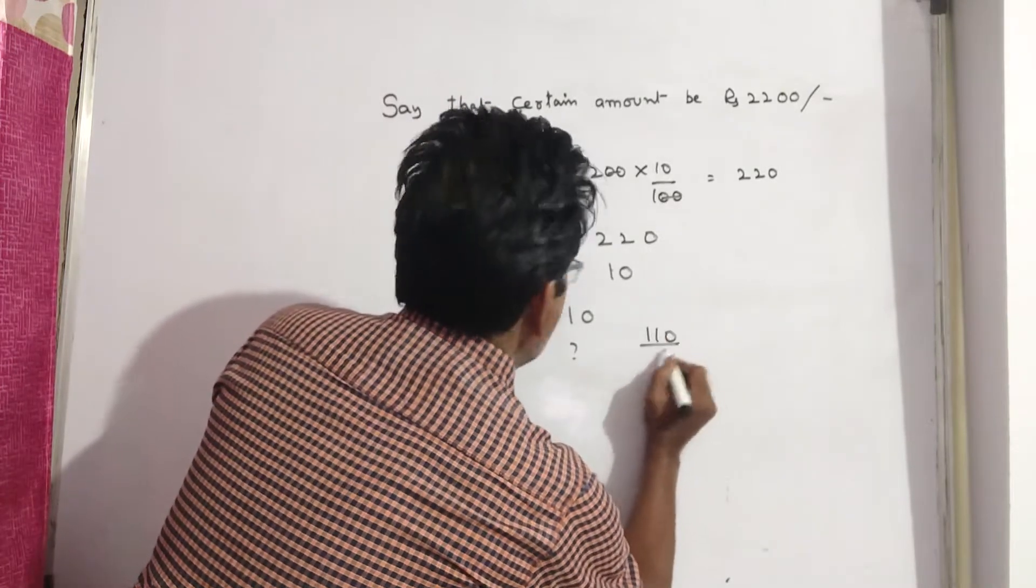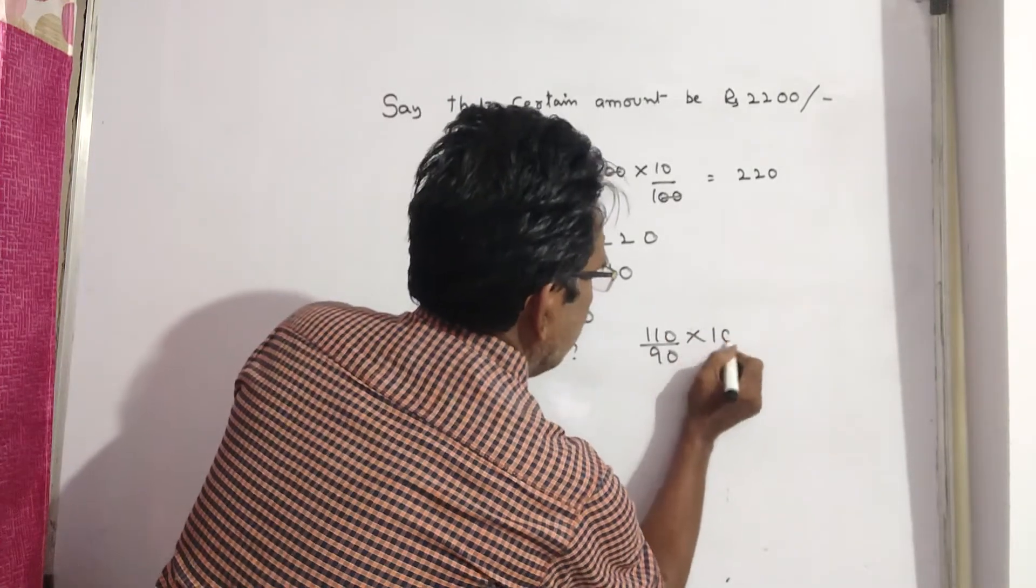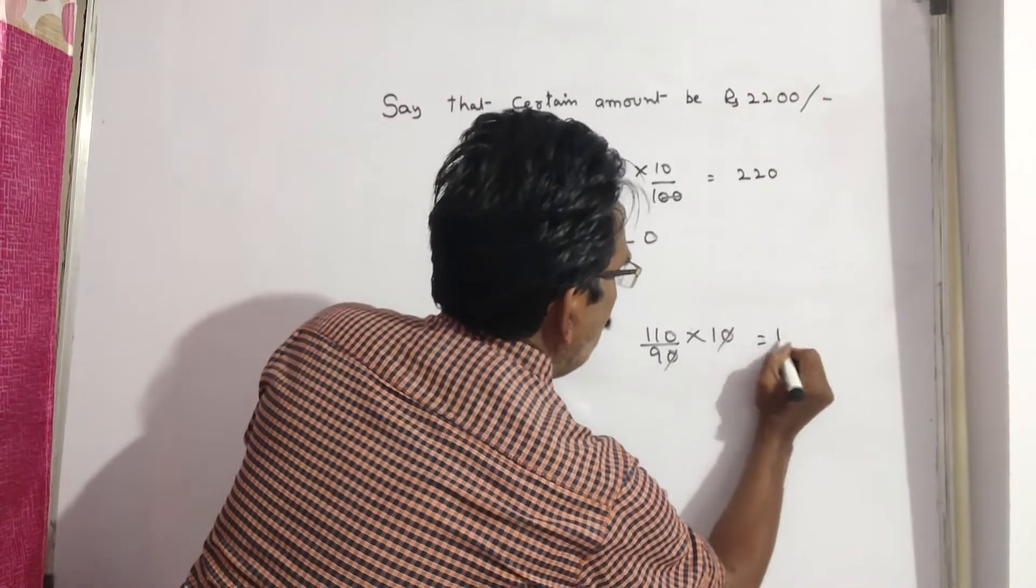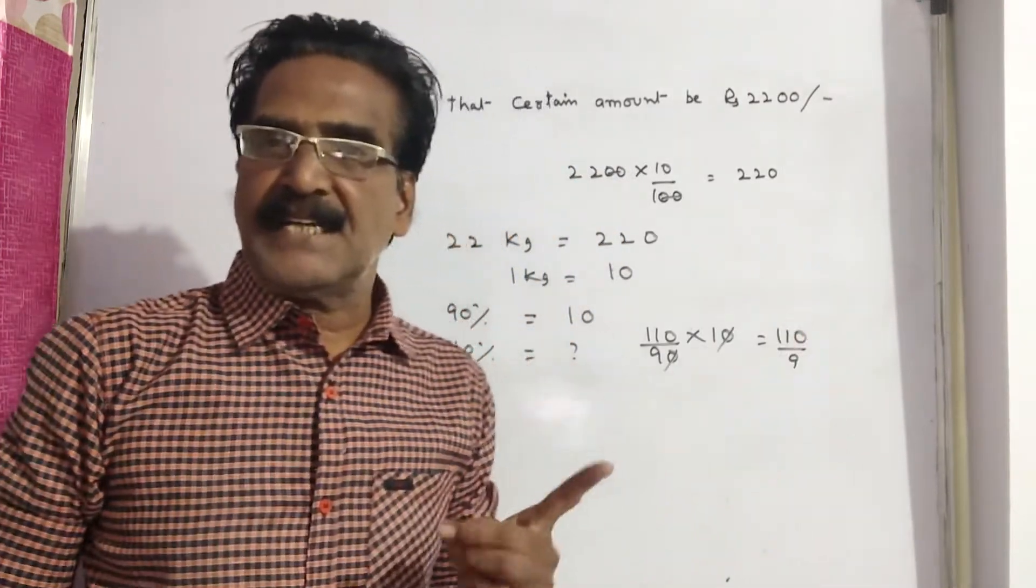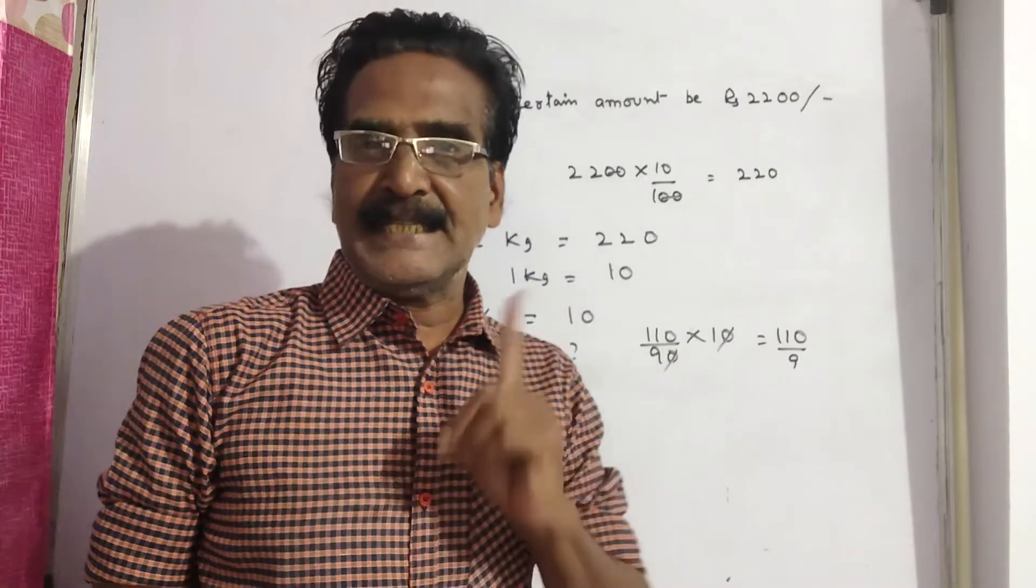110 by 90 into 10. So this is equal to 110 by 90. This is the price of 1 kg sugar at 10 percent increase.